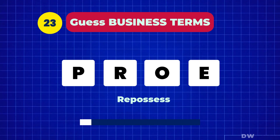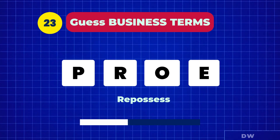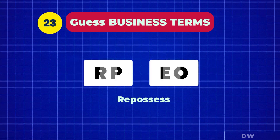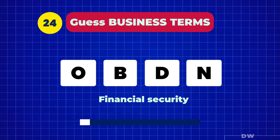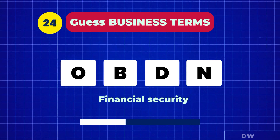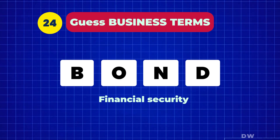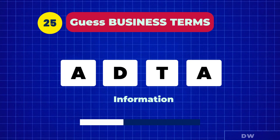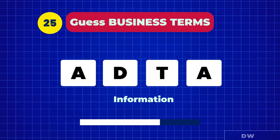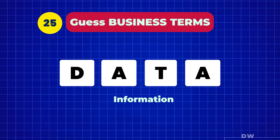How about this one? Financial security — bond. And here's the last one — information — data.